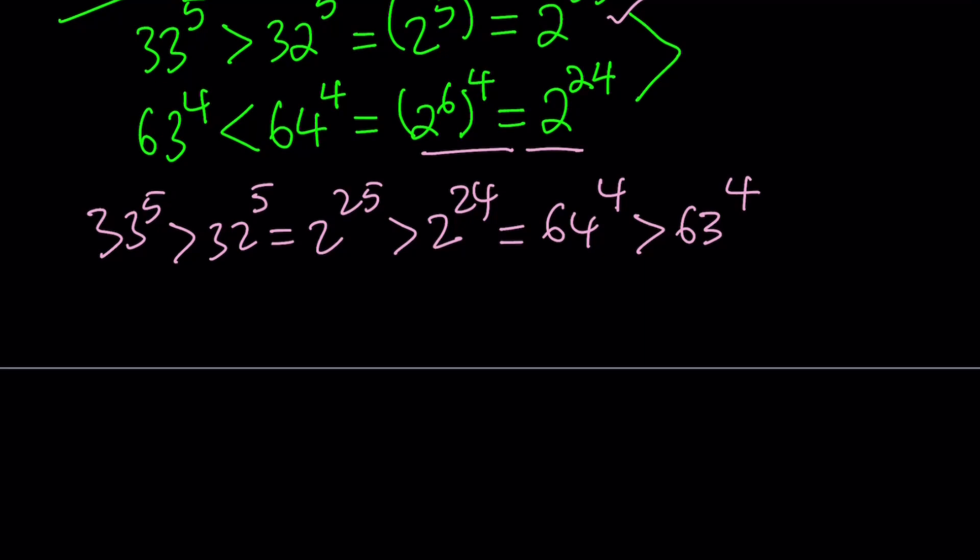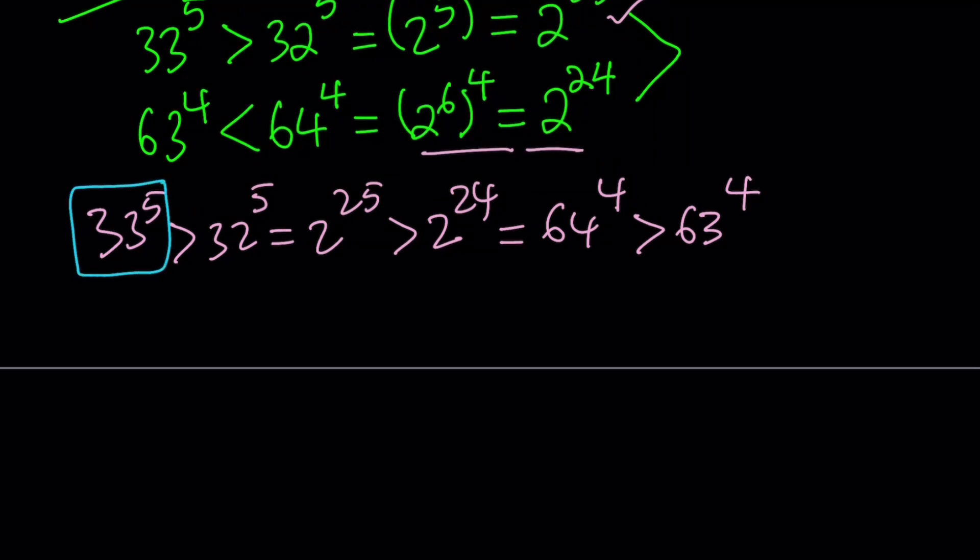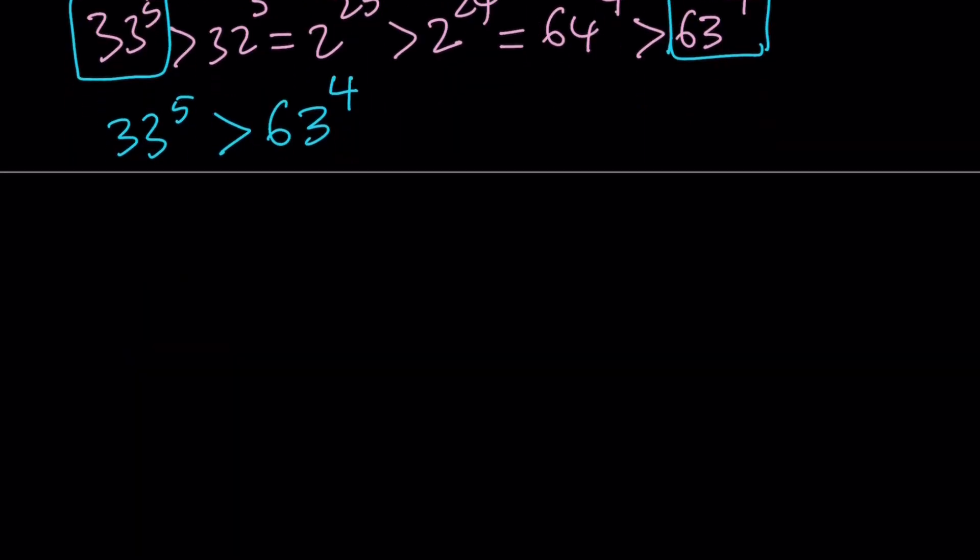Awesome. What is the conclusion? We start with the first number in this chain and connect it to the last number. Obviously everything is either equal sign or greater than sign, so one of the numbers must be greater than the other. So the conclusion is 33 to the fifth power is greater than 63 to the fourth power. I'm also going to give you the numerical values, but only at the end. Let's go ahead and talk about the second method first.